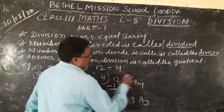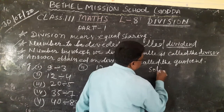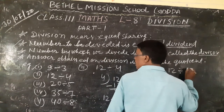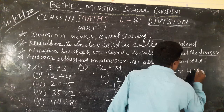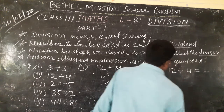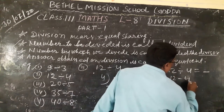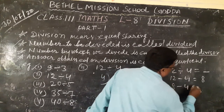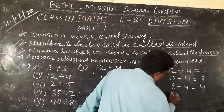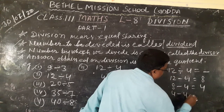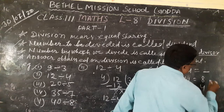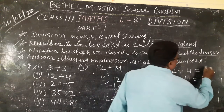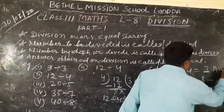Now the subtraction method. 12 minus 4 equals 8, again 8 minus 4 equals 4, and 4 minus 4 equals 0. Count how many times: 1, 2, 3. So 3 is the answer. Clear?